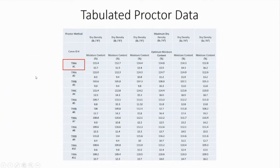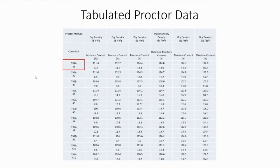In order to develop a family of curves for these individual proctor curves, we have to remember the rules. The first rule is we need at least three curves to fit on a spine in order to define a family of curves. The second rule is that all of the curves on a family of curves must be compacted with the same proctor method — for example, all T99A or all T180C.